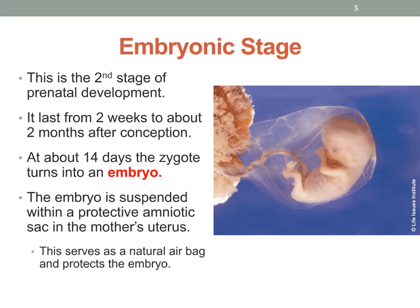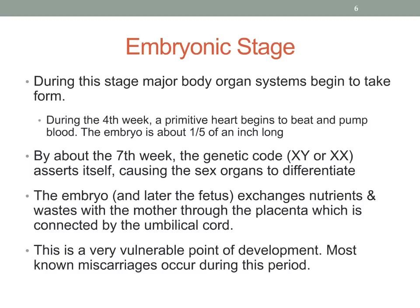As you can see, this embryo is suspended within a protective amniotic sac in the mother's uterus. We think this serves as a natural airbag — it protects the embryo and most likely helps maintain body temperature. During this embryonic stage, the major body organ systems begin to take form. During the fourth week, a primitive heart begins to beat and pumps blood.